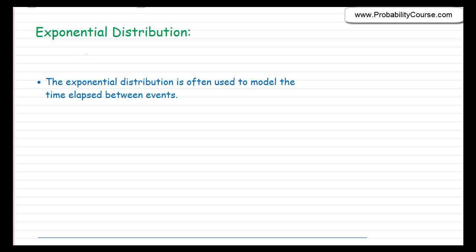Hello, today I would like to talk about the exponential distribution. The exponential distribution is a continuous distribution and it is used in many different applications. For example, it is often used to model the time between events, and because of that it is related to the Poisson distribution.